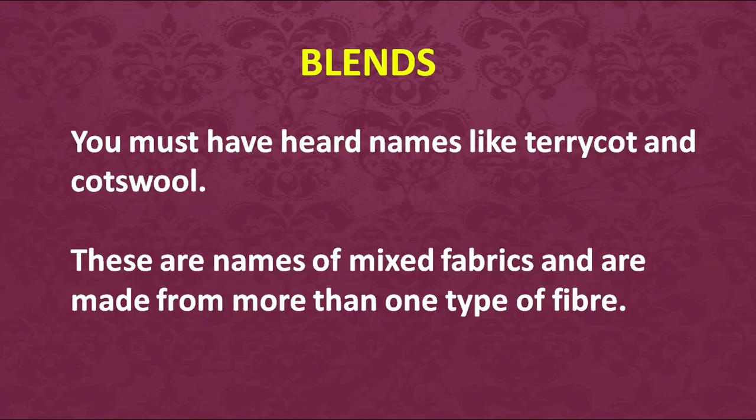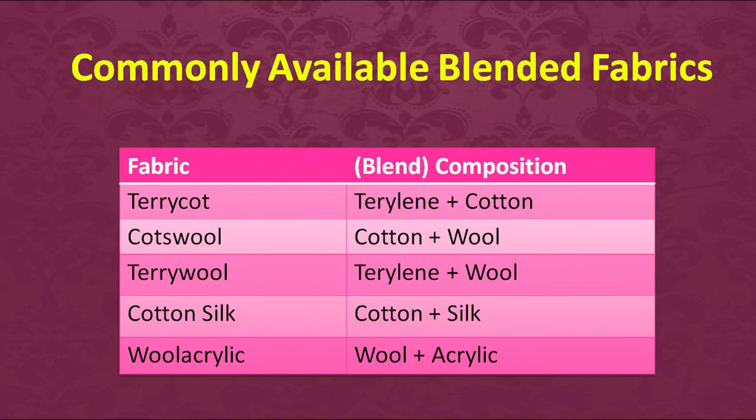Cotton-silk is also one of the blends. Mixed fabrics made from more than one kind of fiber are known as blends. Blends have been created because of certain properties and needs. For example: terricot is terrylene and cotton; kotswool is cotton and wool; cotton-silk is cotton and silk; wool-acrylic is wool plus acrylic. There are many more blends in the market as technology evolves.